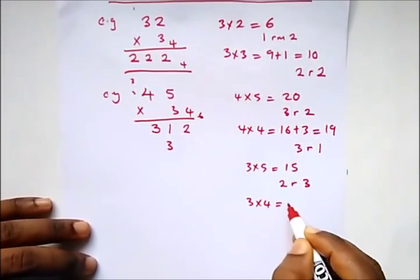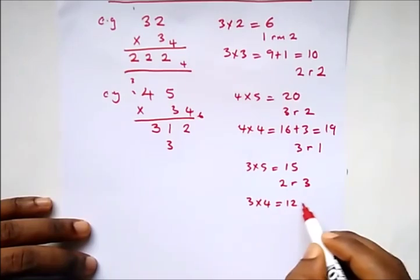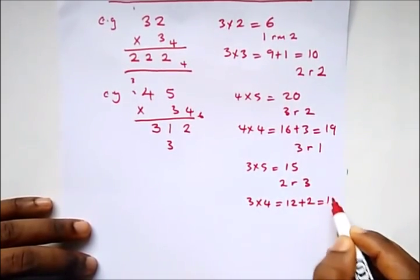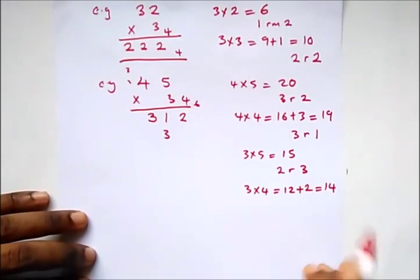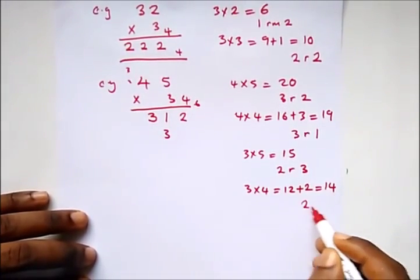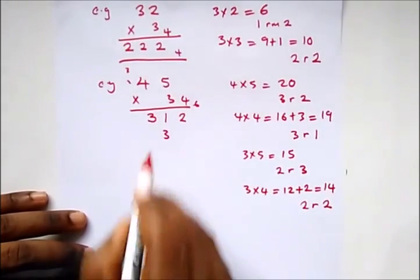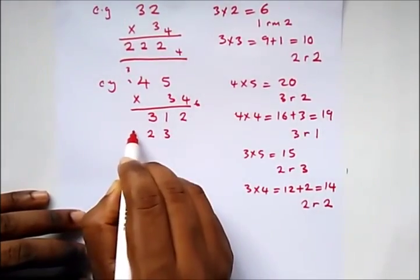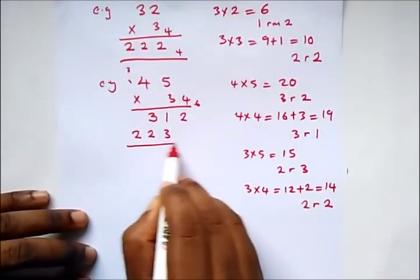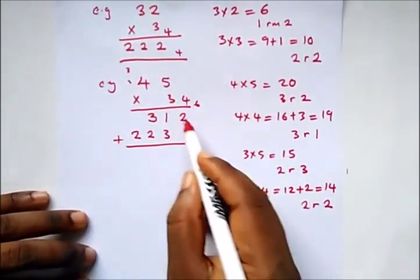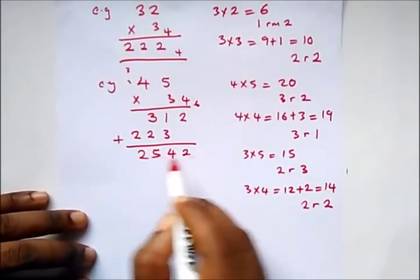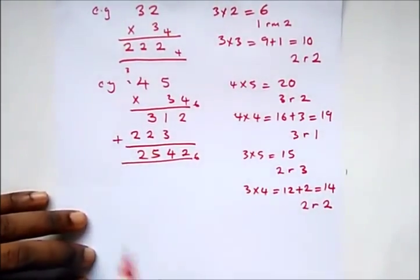Then 3 times 4 gives us 12, plus the carried 2, which gives us 14. How many times would 6 go into 14? That gives us 2 times remainder 2 — write your 2 down and carry 2. Then we add to get 2452 in base 6.